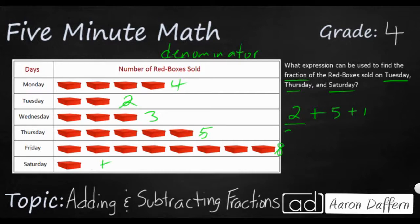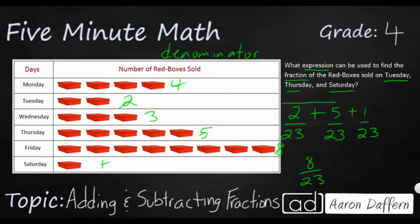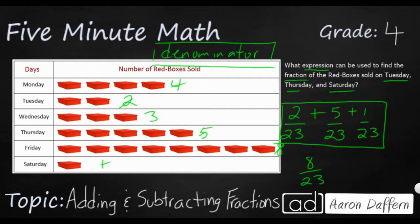So my fractions are going to be two twenty-thirds plus five twenty-thirds plus one twenty-third. When you add fractions, the denominator has to be the same. In this case we're just looking at the total number of red boxes, so it's twenty-thirds plus twenty-thirds plus twenty-thirds. This is an expression because it doesn't have an equal sign. If we wanted to add them up, we could get eight twenty-thirds. Really, what we're looking for is this expression. If you're asked to find a fraction expression and you don't see a fraction, add everything up — that's your denominator — and your numerators are the individual components: Tuesday, Thursday, and Saturday.